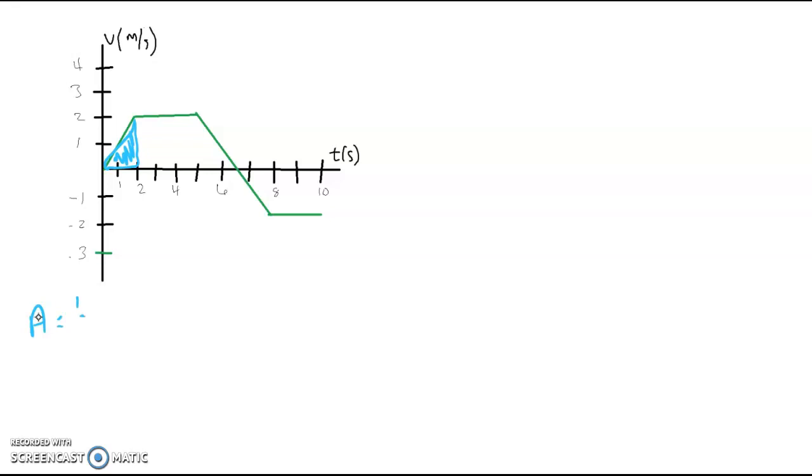And then, so let's find the area of that triangle. Area is 1 half base times height for a triangle. Our base here, so we have 1 half times our base of 2 seconds, multiplied by our height of 2 meters per second. So 2 times 2 is 4, divided by 2 is 2. And then units, seconds multiplied by meters per second gives us meters. So in that first region, we have a displacement of positive 2 meters.